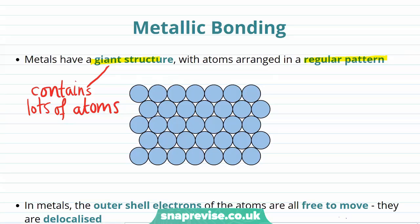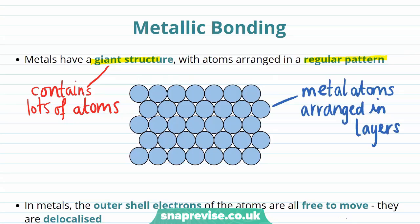In this diagram you can see an example of the regular pattern formed in a metallic bond, where the metal atoms are arranged in layers. This is a 2D or flat representation of metallic bonding, but in reality this regular pattern continues in 3D.